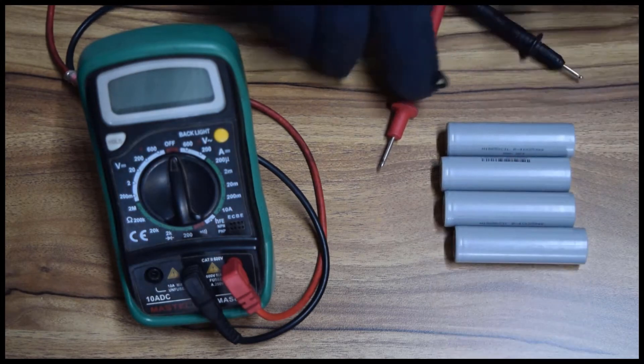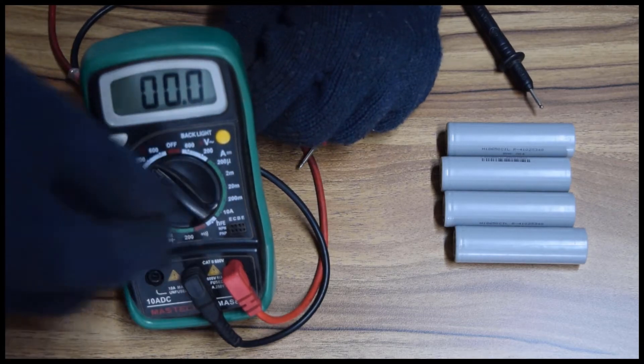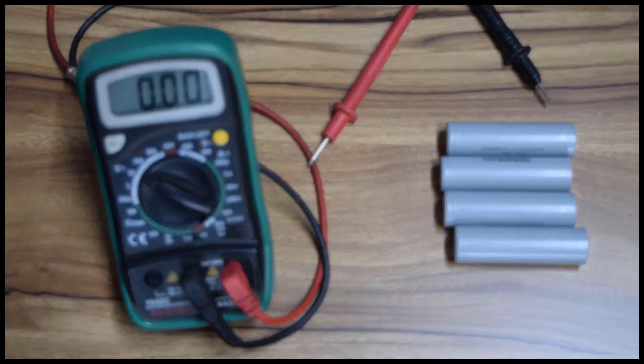Check the individual cell voltages and ensure that the values are close to each other with the tolerance of plus or minus 0.2 voltage.